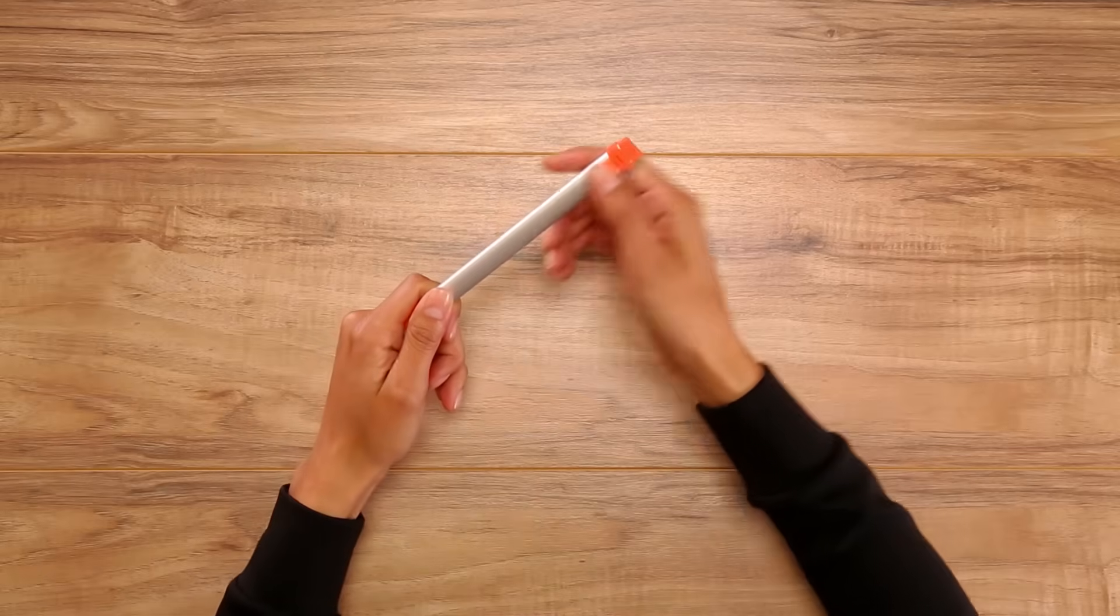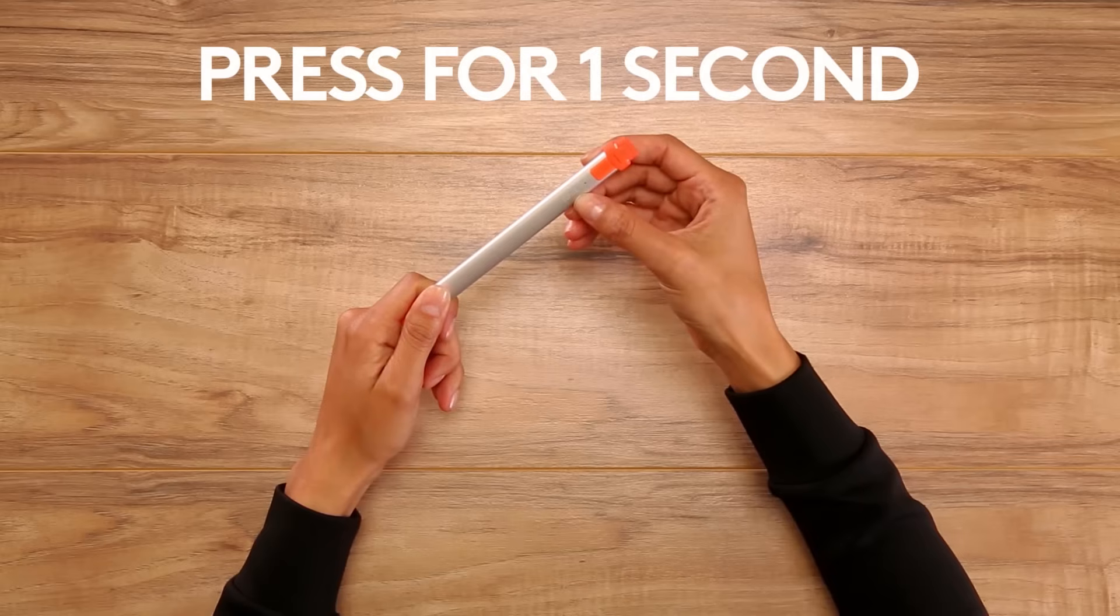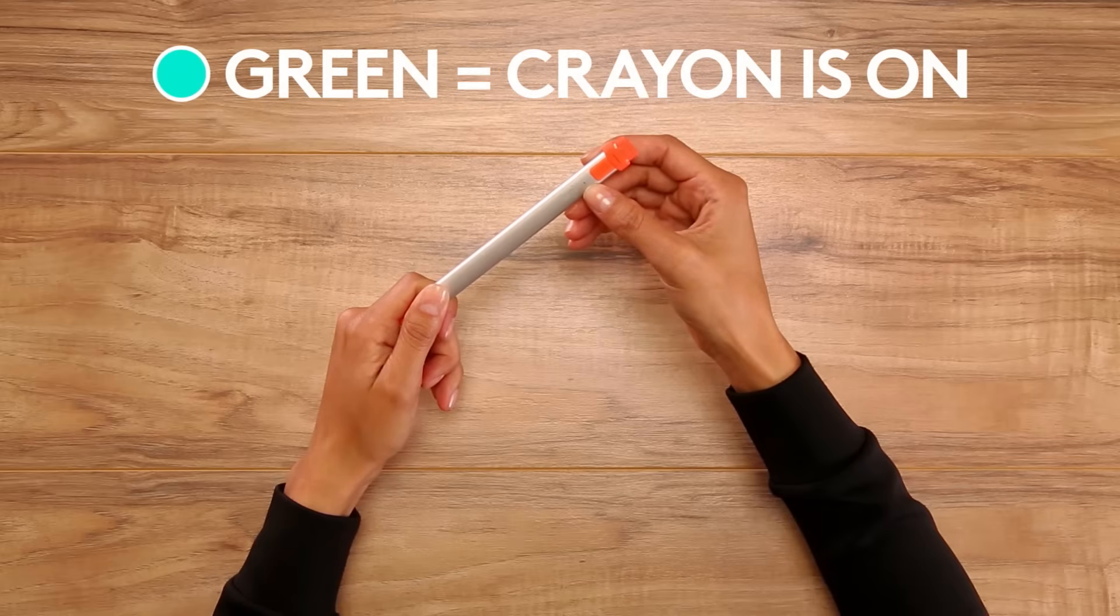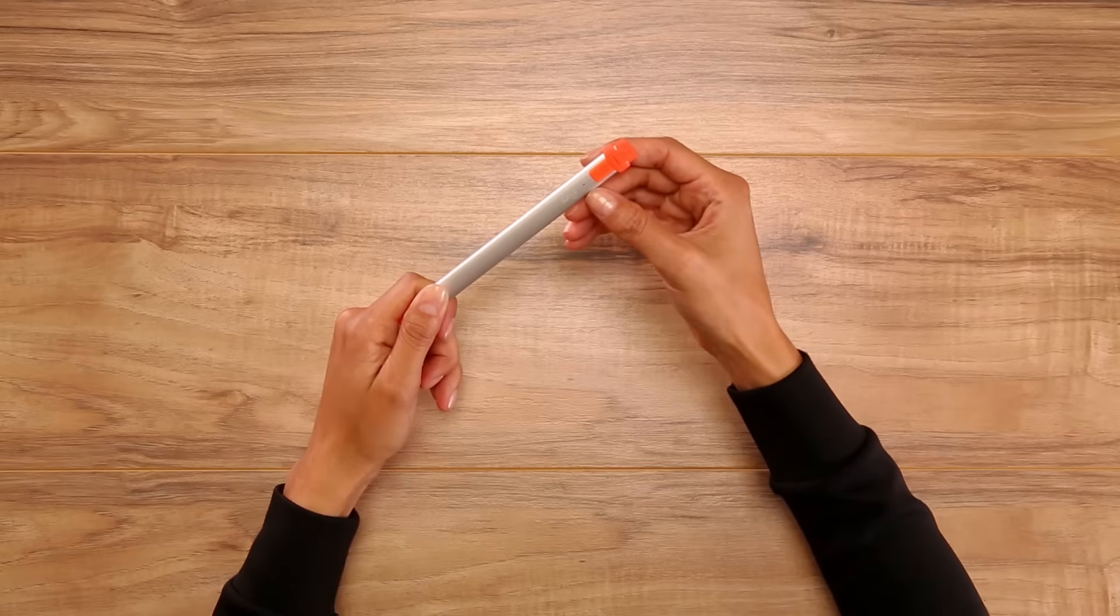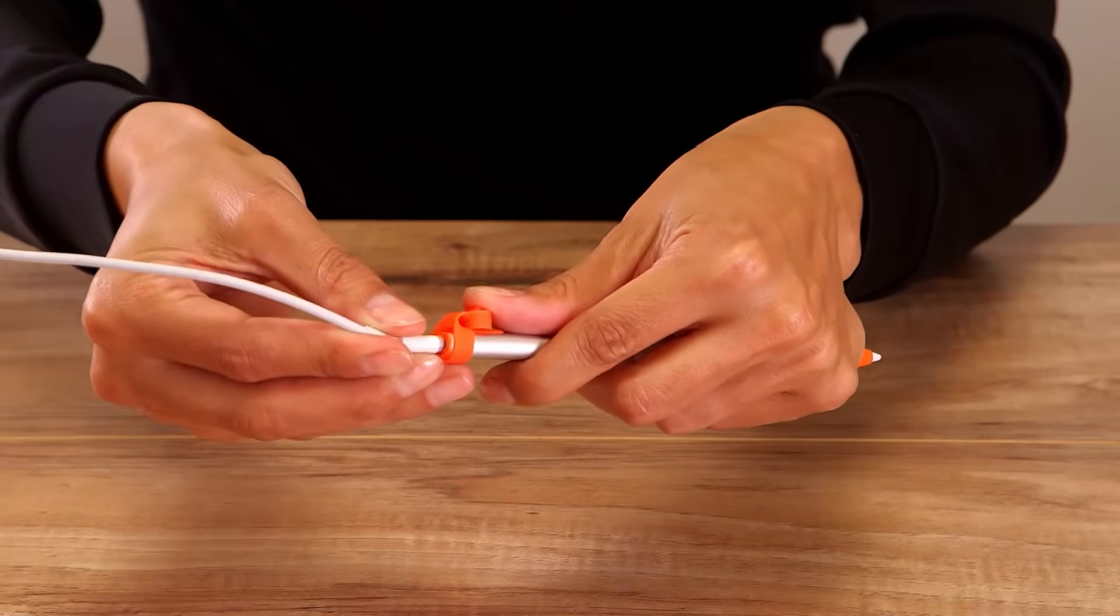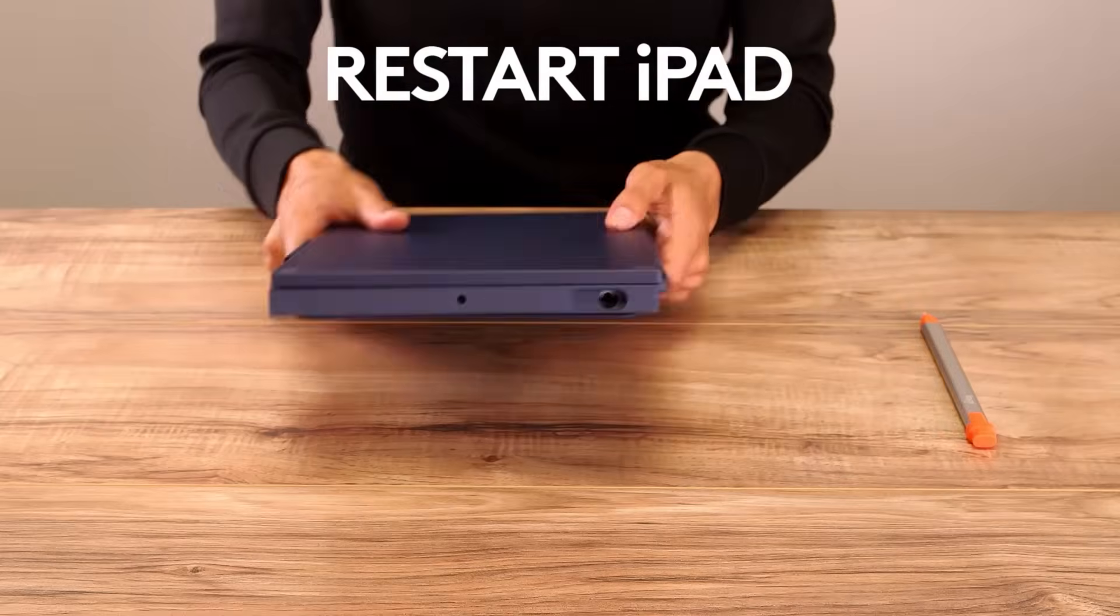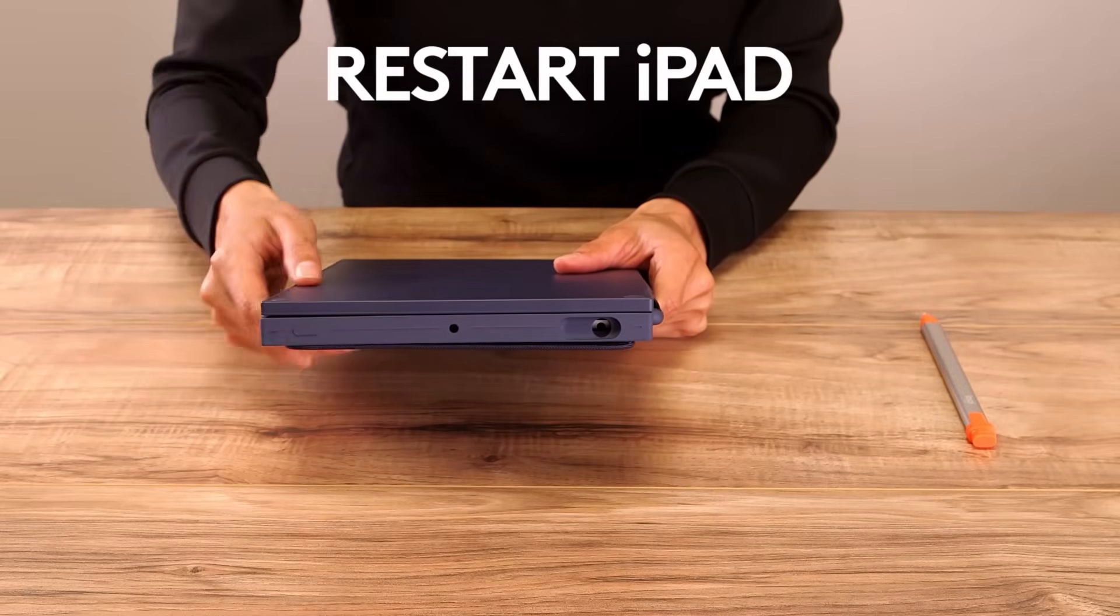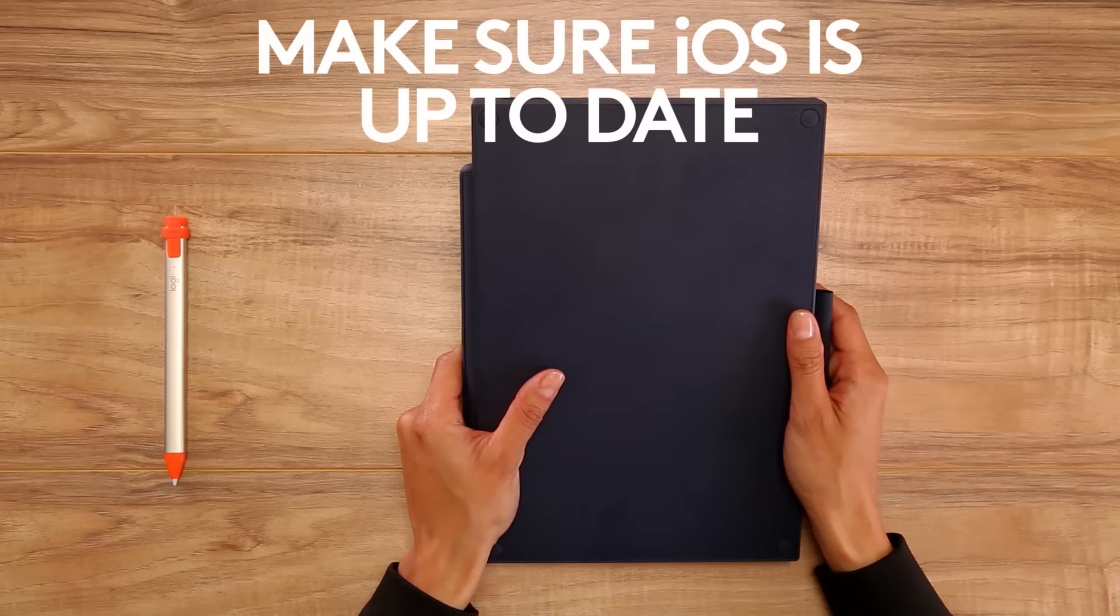If Logitech Crayon does not work, follow these steps. Make sure Crayon is on and powered. Press the power button for one second to make sure it's on. The LED light should light up green. If the LED doesn't light up, press again. If this did not resolve the problem, charge Crayon for 60 seconds and repeat the first two steps. If this doesn't help, then restart the iPad by turning it fully off with a long press of the power button and then press again to turn it back on. Always make sure iOS on iPad is up to date.